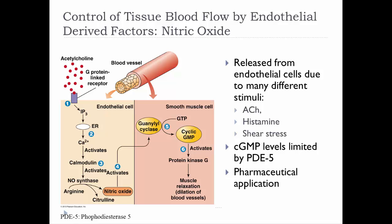Nitric oxide release can also be influenced by other chemicals besides metabolites or low oxygen levels. Endothelial cells stimulated by acetylcholine, histamine, or even shear stress can cause nitric oxide formation. Acetylcholine binding triggers a cascade of events inside the endothelial cell — the inside lining — ultimately forming nitric oxide. Nitric oxide then activates a second messenger system in the smooth muscle, resulting in cyclic GMP, which activates protein kinases responsible for muscle relaxation. So the more nitric oxide, the more cyclic GMP, and the more the muscle relaxes.